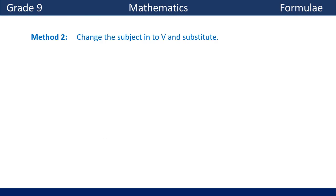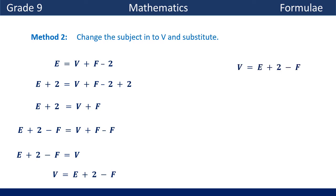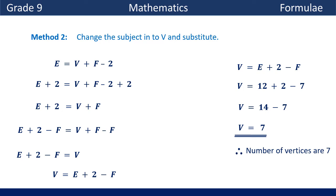Using Method 2 for the same example: change the subject to V in the formula E equals V plus F minus 2. Add 2 to both sides: E plus 2 equals V plus F. Then subtract F from both sides: V equals E plus 2 minus F. Now substitute E equals 12 and F equals 7, giving V equals 12 plus 2 minus 7 equals 7. The number of vertices in this solid is 7.